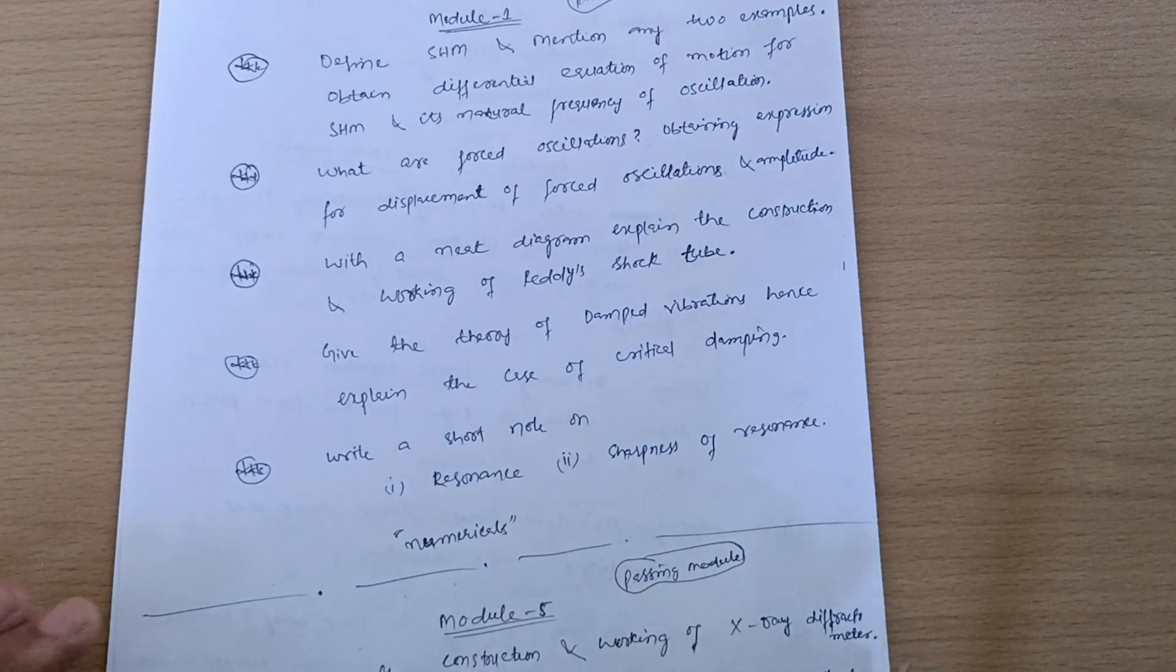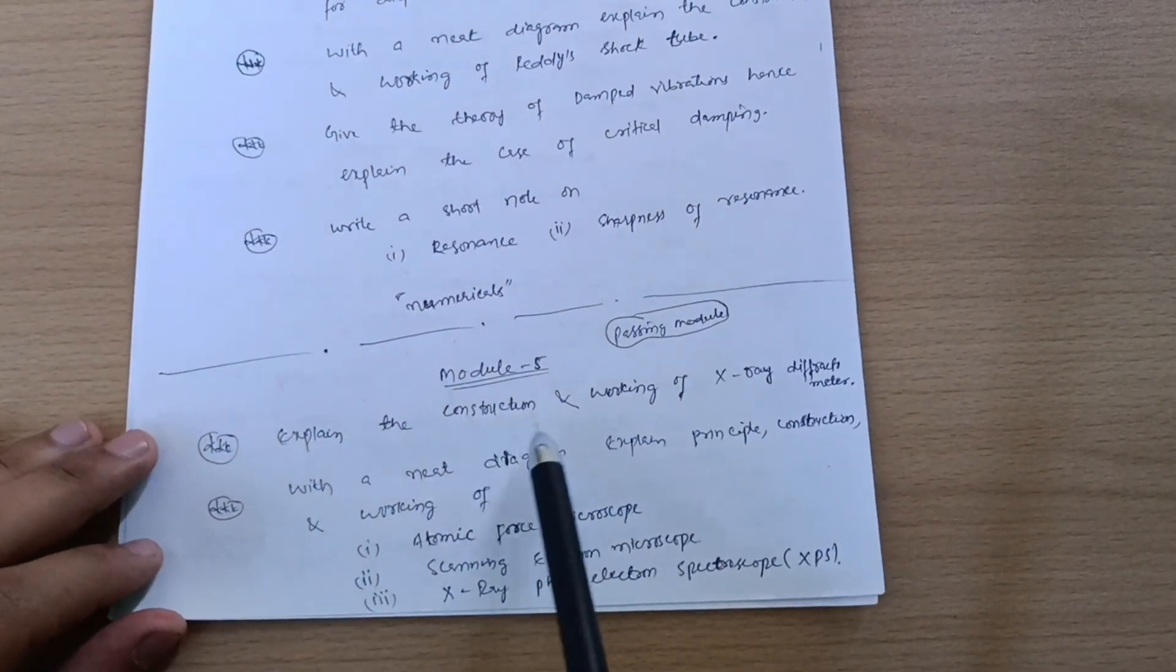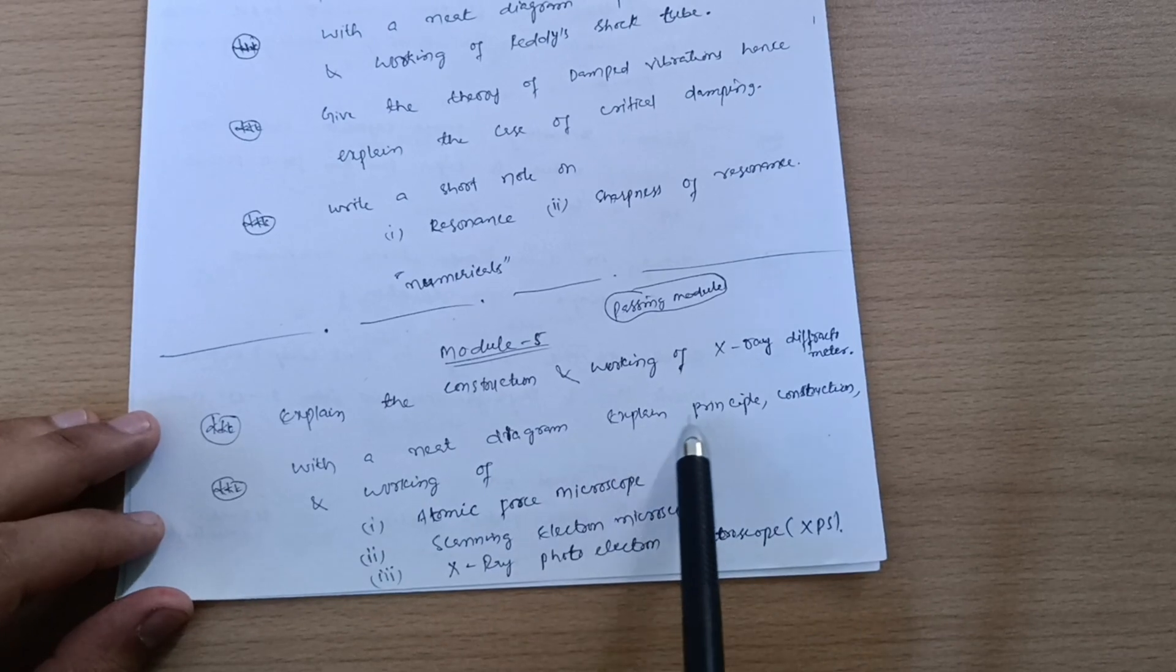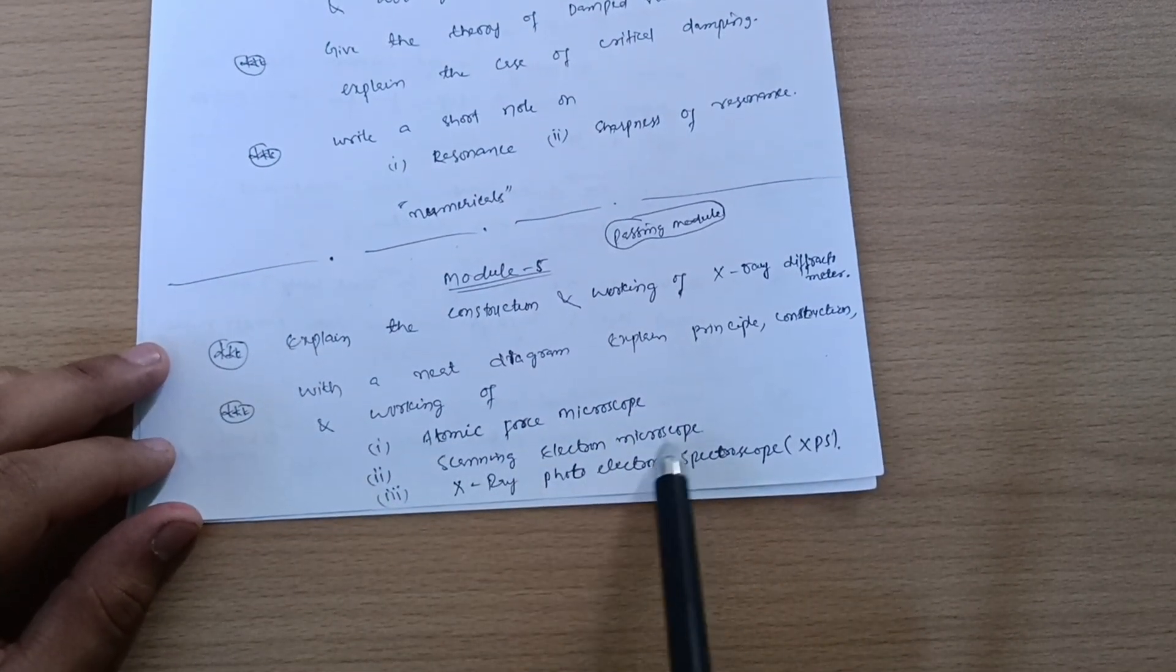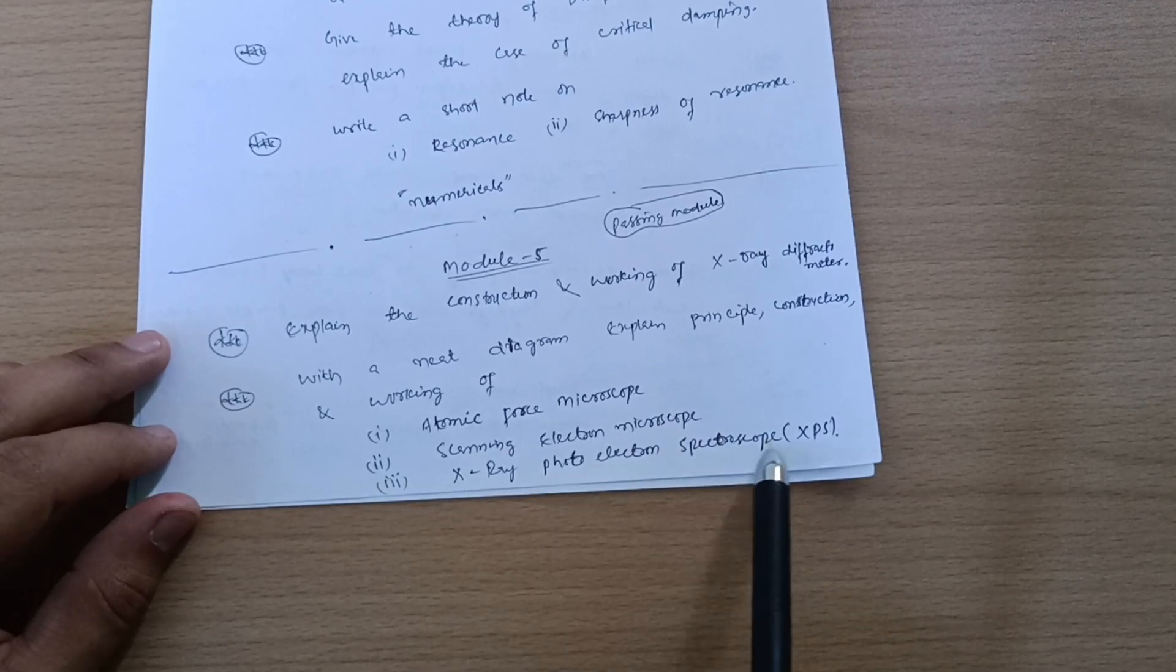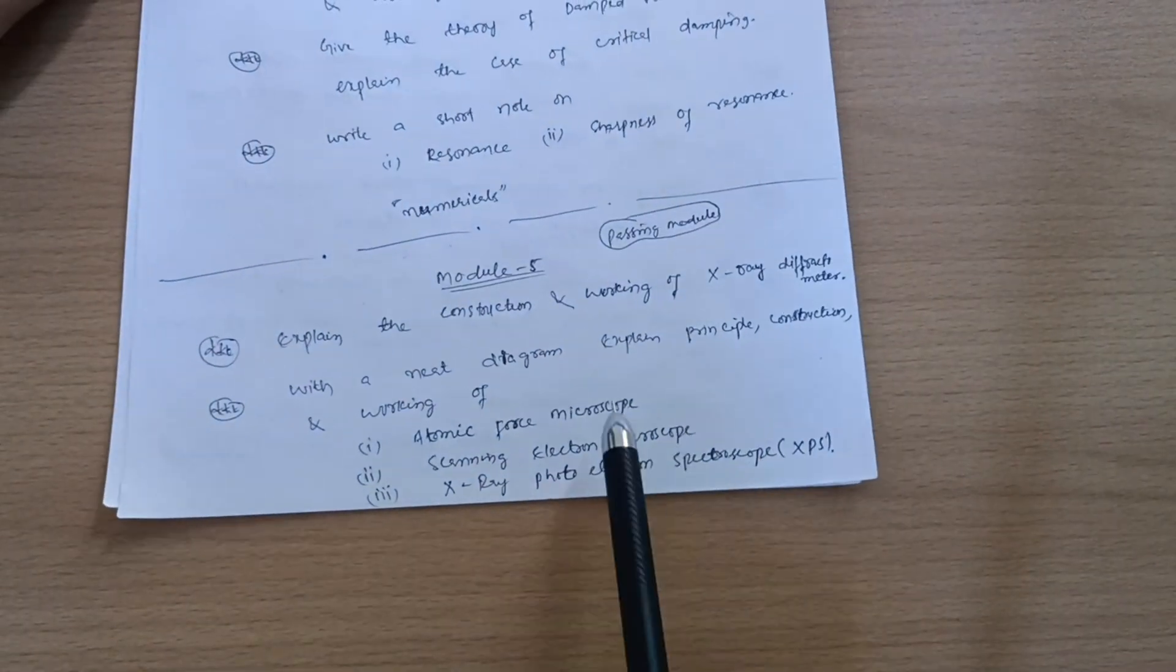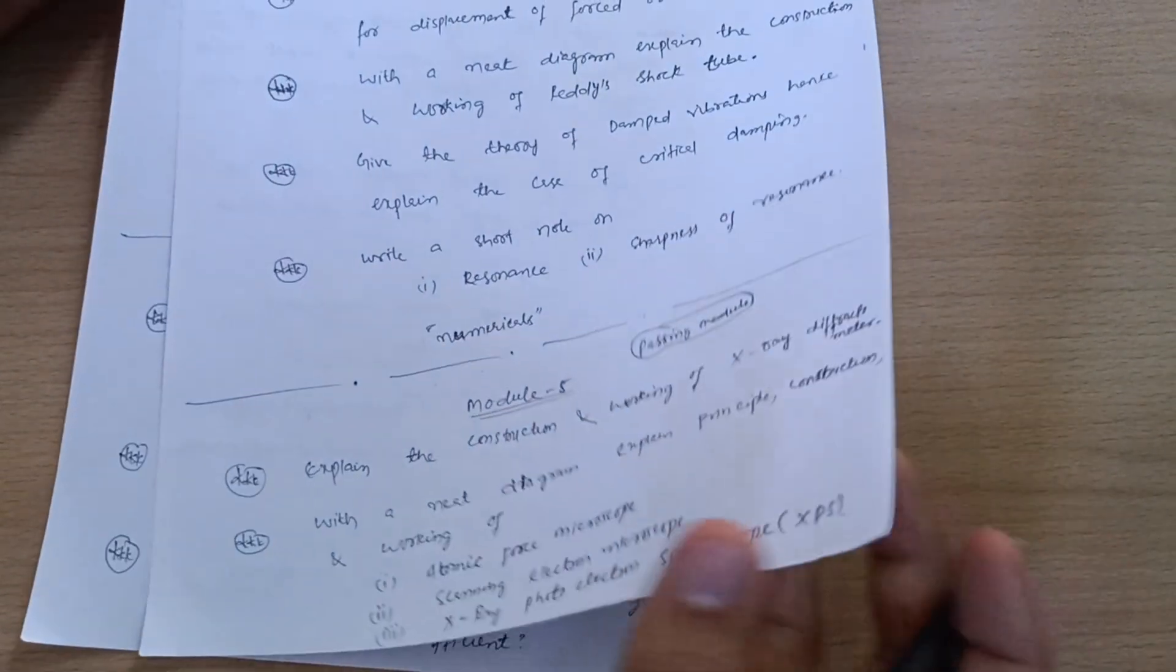Next is Module 5, which is again a passing module. Explain the construction and working of X-ray diffractometer. With a neat diagram, explain principle, construction and working of atomic force microscope, scanning electron microscope, X-ray photoelectron spectroscope XPS. This is the diagrammatic module and passing, so you can easily get 16 marks if you just go through the construction and working part of these microscopes and spectroscopes.